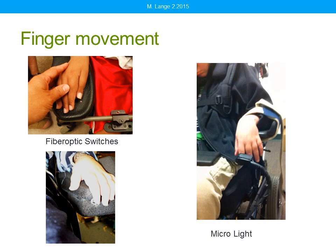We can also capture finger movement using fiber optic switches. Julian has a fiber optic switch in the hand pad of an arm trough. Another client, Fareed, has a custom-made arm trough with the fiber optic placed on the edge for a slight flexor movement. Christopher is using a micro light on a gooseneck, extending his finger slightly to activate the switch — this is during an evaluation, and he had some strapping because his arm wasn't staying within the arm trough. A better support system was recommended to keep him in alignment with the switch.